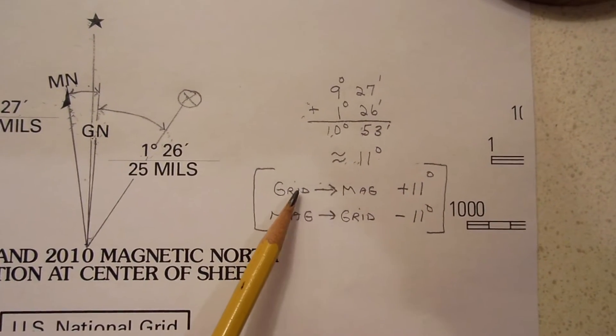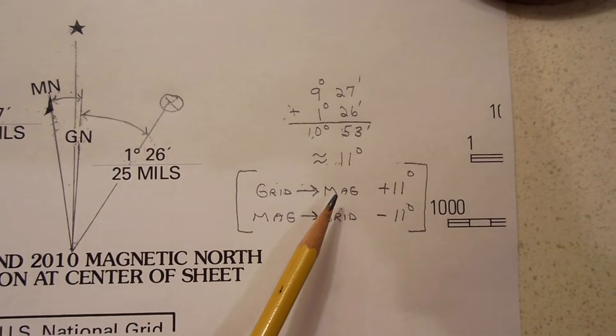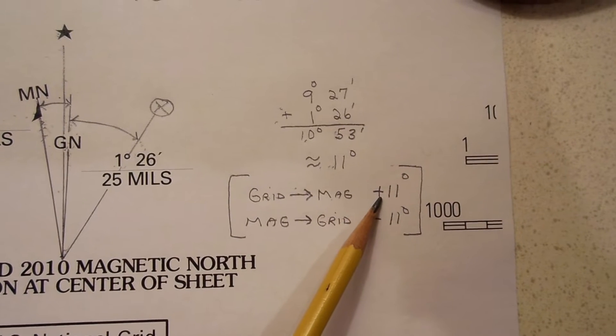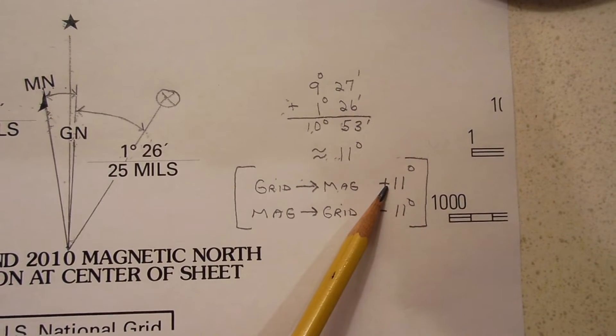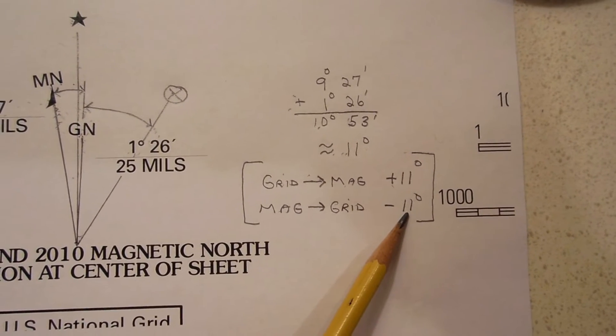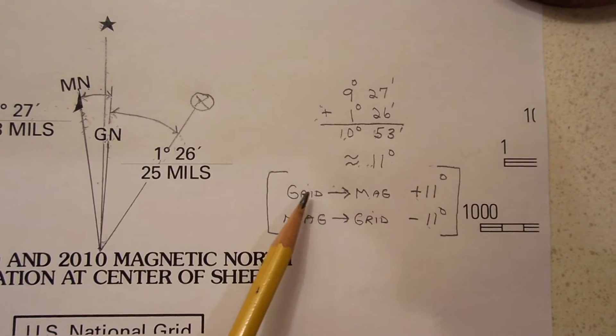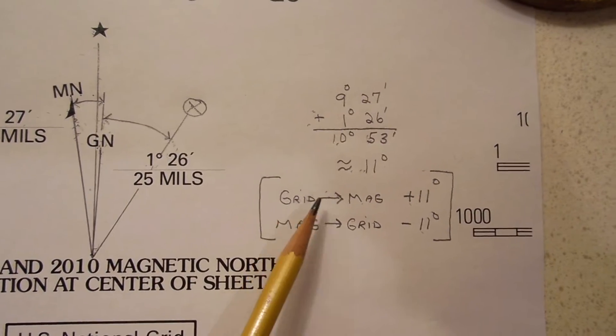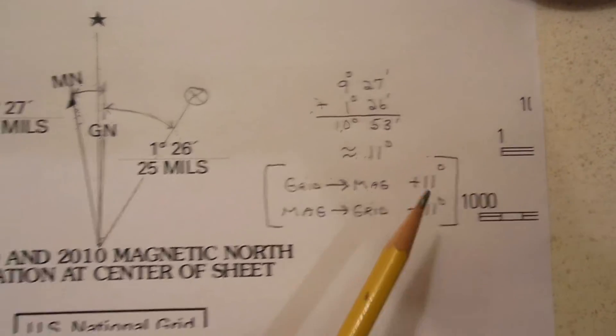So, on this map, if I'm going to go from grid north to magnetic north, I have to add 11 degrees to my grid angle. If I'm going from magnetic to grid, I have to subtract 11. Well on the map, I'm going from grid to magnetic, so I have to add 11 degrees.